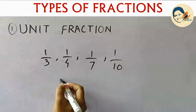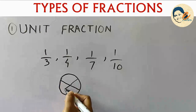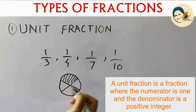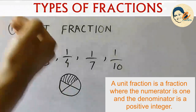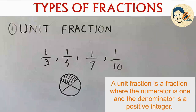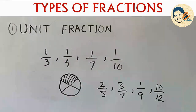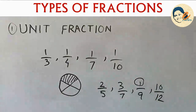Assume you have a pizza and the pizza has 4 equal parts and you ate only one portion of this pizza — so you ate a unit fraction of this pizza. If you have a set of fractions, the one where the numerator is one is the unit fraction. Now you can identify the unit fraction in a set of fractions.